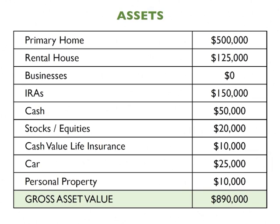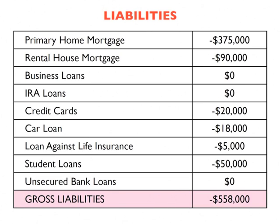Here's an example of what assets could look like: real estate you own, rental property, businesses you own, IRAs, cash, stocks, life insurance with a cash value, cars, and personal property. Add all of those up and that's your total assets. Liabilities are anything you owe: mortgages, loans you personally guarantee, credit cards, loans against your life insurance, student loans, and unsecured bank loans — all negative numbers showing as liabilities.